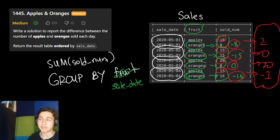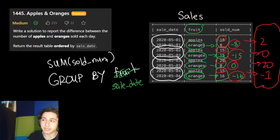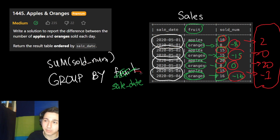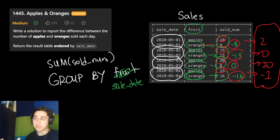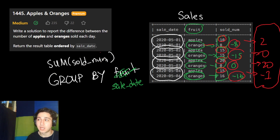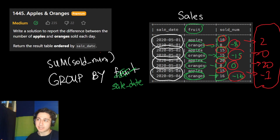It may seem confusing at first, but essentially what we're doing is summing together the number of items sold for each day — that's why we're grouping by the sale date. But for each sold amount, if it's an orange, we turn it negative so that we subtract it from the amount of apples. So we have 10 apples, and instead of adding the oranges, we add the negative of that number — which is just subtracting — and we get our difference.